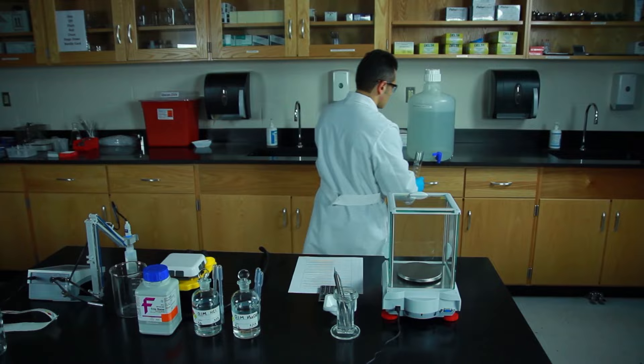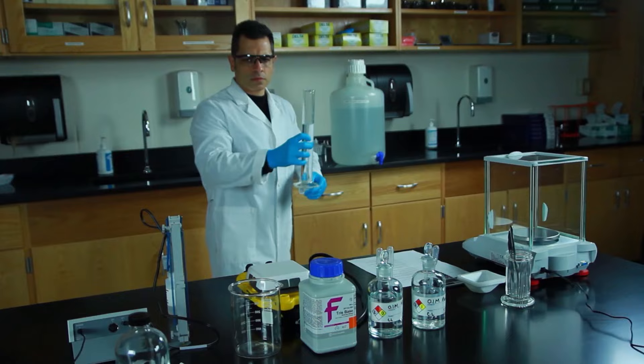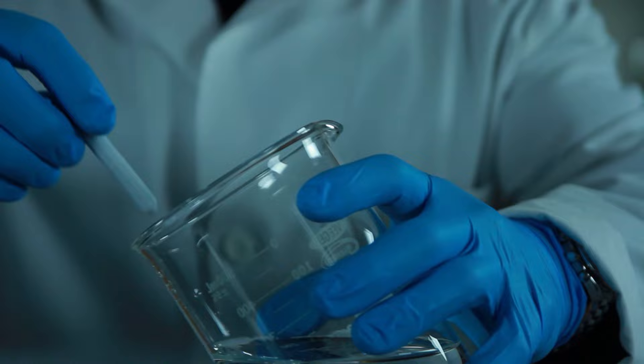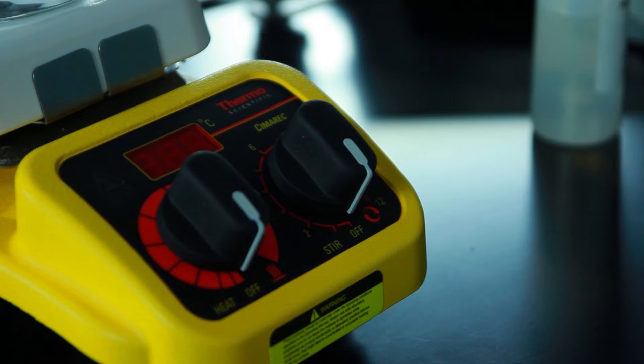The first step is to add approximately 210 milliliters of water to a 250 milliliter graduated cylinder. Transfer the water from the cylinder to a 600 milliliter beaker. Add a stir bar and place the beaker onto the stir plate.